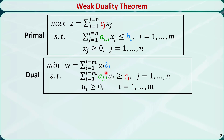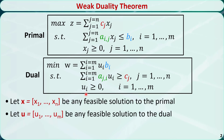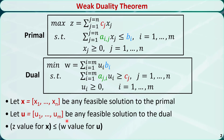With this in mind, let's introduce the weak duality theorem. Let x be any feasible solution to the primal problem, and let u be any feasible solution to the dual problem. The weak duality theorem says that the z value for x in the primal is always less than or equal to the w value for u in the dual.